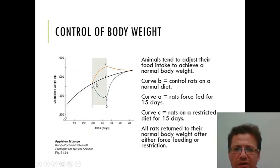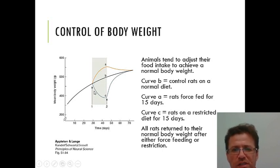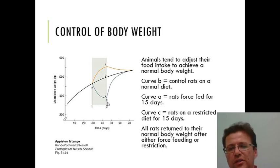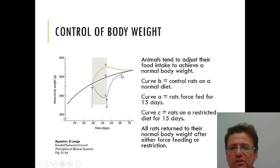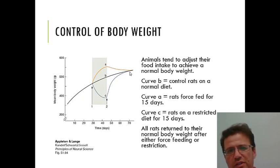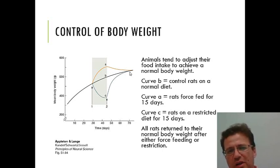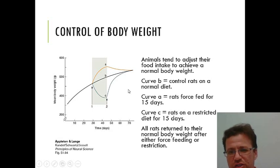A graph illustrates this: three groups of animals are raised normally. After about a month, group A gets excess calories, group B continues on normal calories, and group C gets reduced calories. Group A gains weight and group C loses weight, but this change in calories only occurs for 15 days. After they all return to a normal diet, groups A and C return to the mean — suggesting an internal set point keeping them at a particular weight. If they simply ate the same amount thereafter, A should have remained higher and C lower.